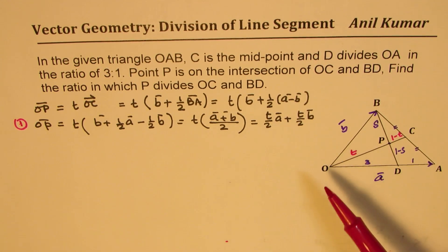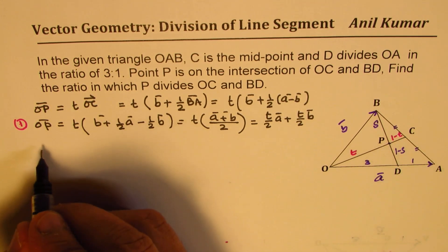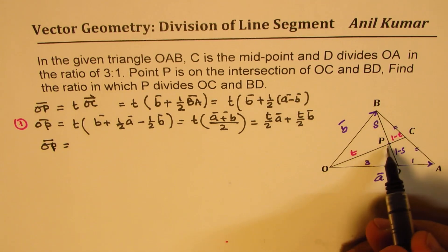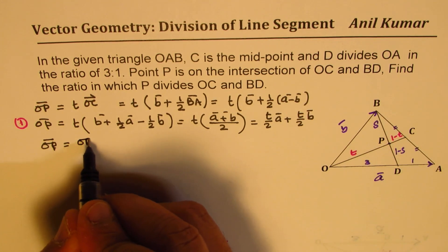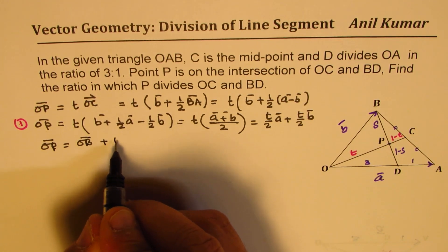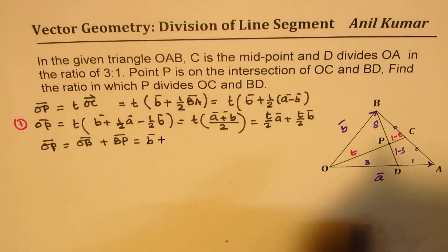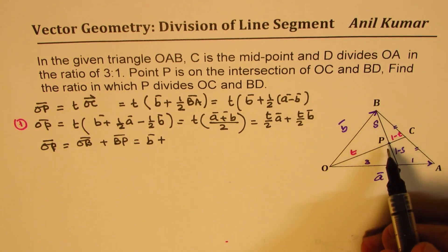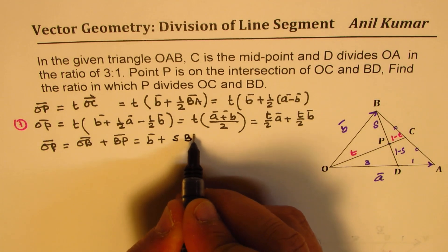Now, let us try to write OP as a combination of this parameter S. So, we could write OP as equal to, so we could say OB plus BP. OB is vector B plus B to P. Now, how do we write B to P? B to P is S times BD.